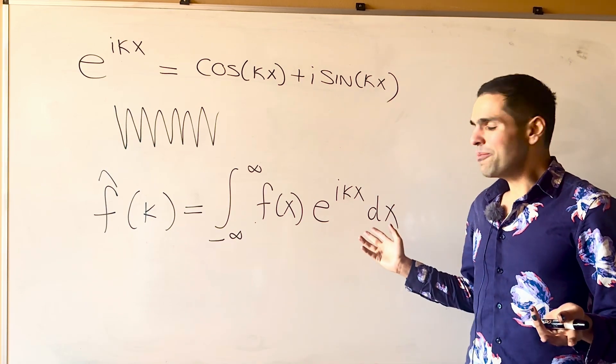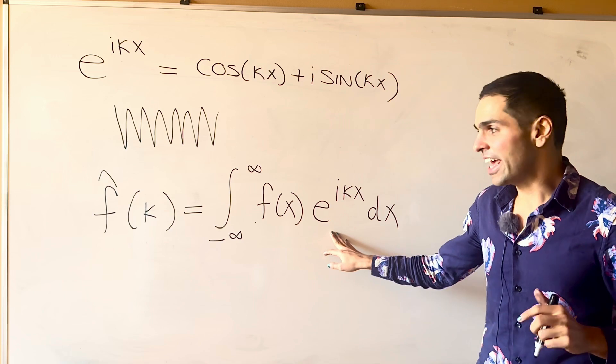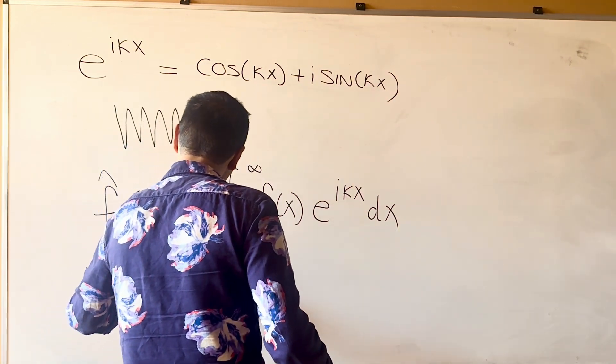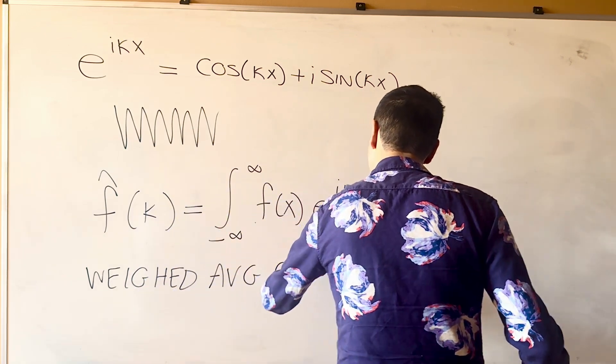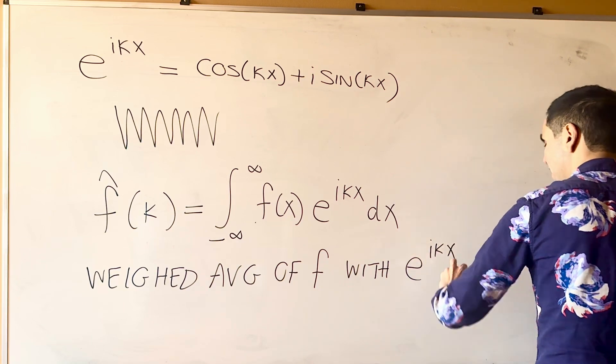So, a couple of remarks. First of all, the interpretation is the same. So, this is just the weighted average of f with those squiggly functions, e to the i kappa x.